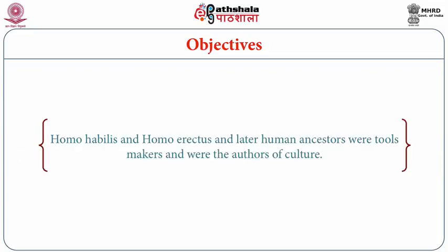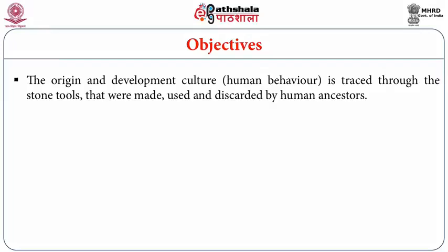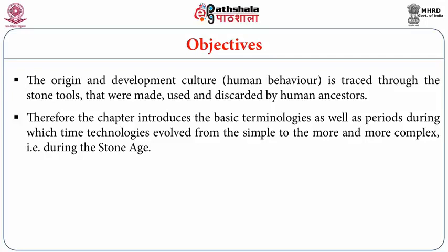Homo habilis and Homo erectus and later human ancestors were tool makers and were the authors of culture. The origin and development of culture, i.e. human behavior, is traced through the stone tools that were made, used and discarded by human ancestors. Therefore, this chapter introduces the basic terminologies as well as periods during which technologies evolved from the simple to the more complex, i.e. during the Stone Age.